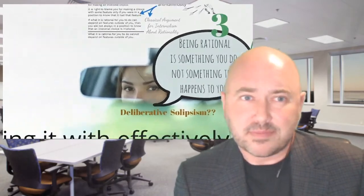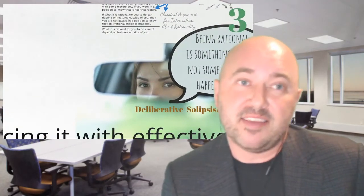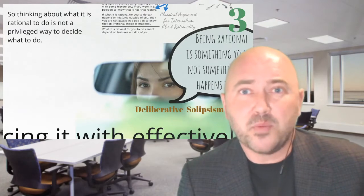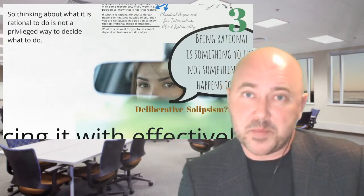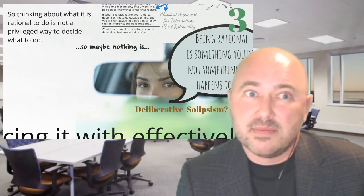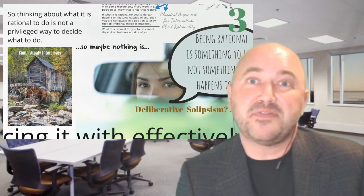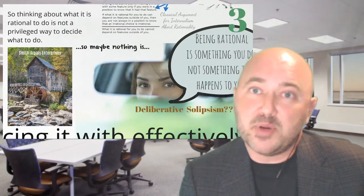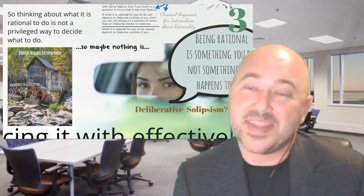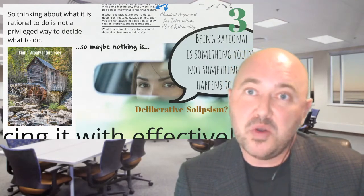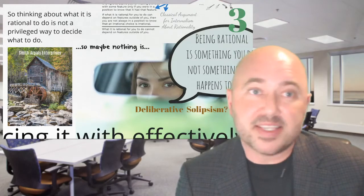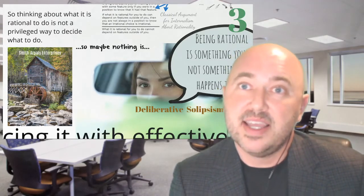So much for the naive picture. What I've done is rejected it — thinking about what's rational to do is not a privileged way to decide what to do. And yet we had the three envelopes argument, which seemed to show that thinking about what's correct is also not a privileged way to decide what to do. I think that's fine — it would be grist for the mill of those who think what's important in deliberation is to think about doing the right thing de re and not de dicto. Nevertheless, I think this is not correct.